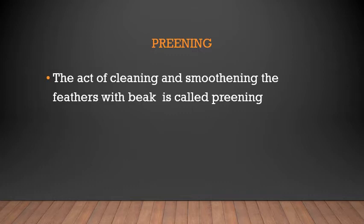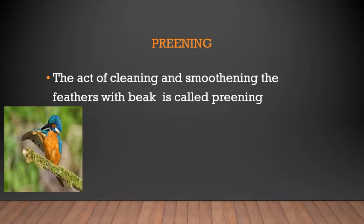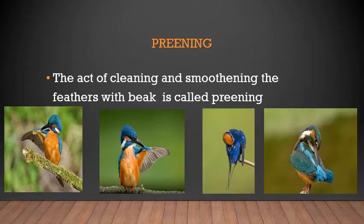The act of cleaning and smoothening the feathers with beaks is called preening. Here are four images where you can see a kingfisher cleaning and smoothening its feathers. It occasionally does this so that its feathers remain clean and ready for use.